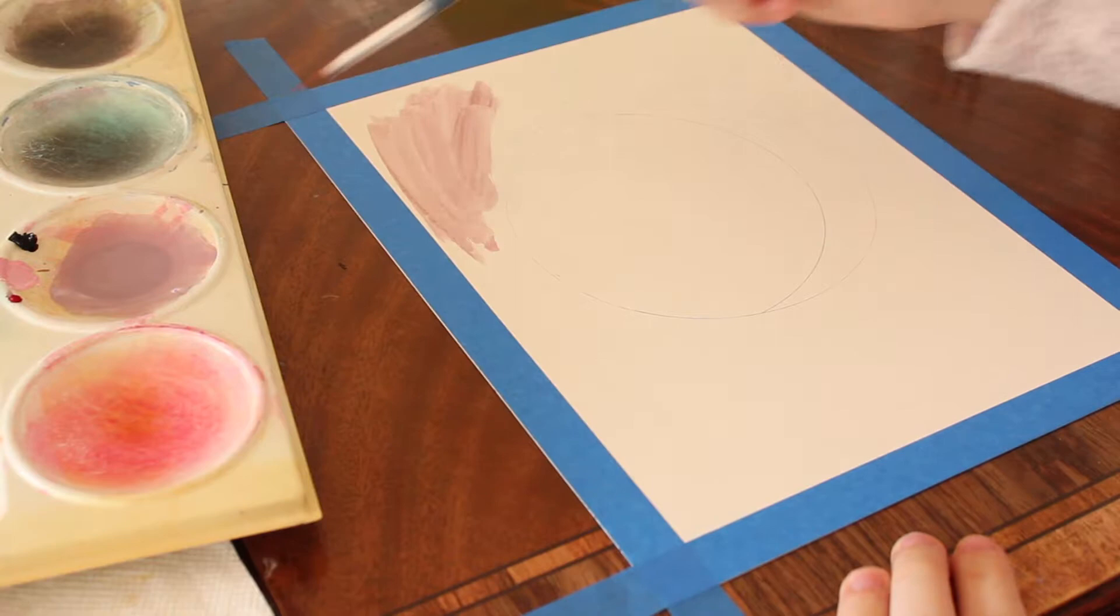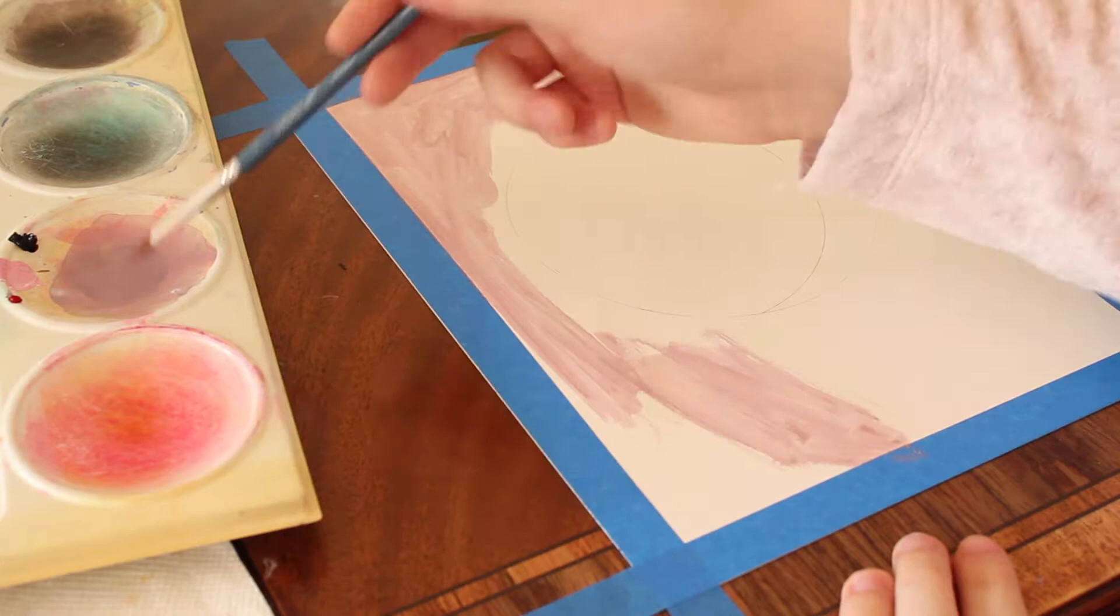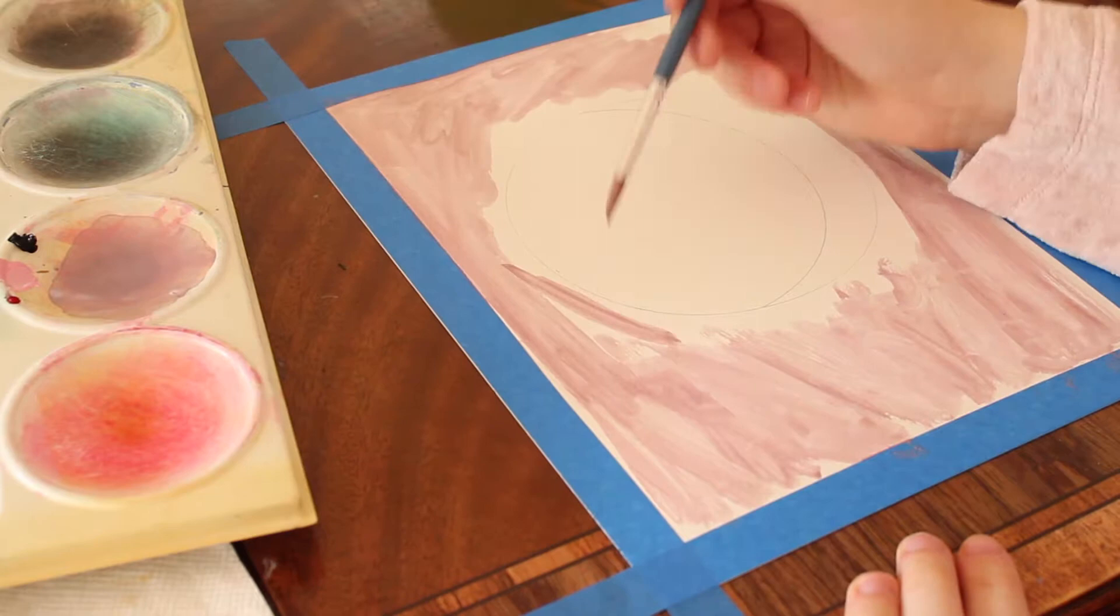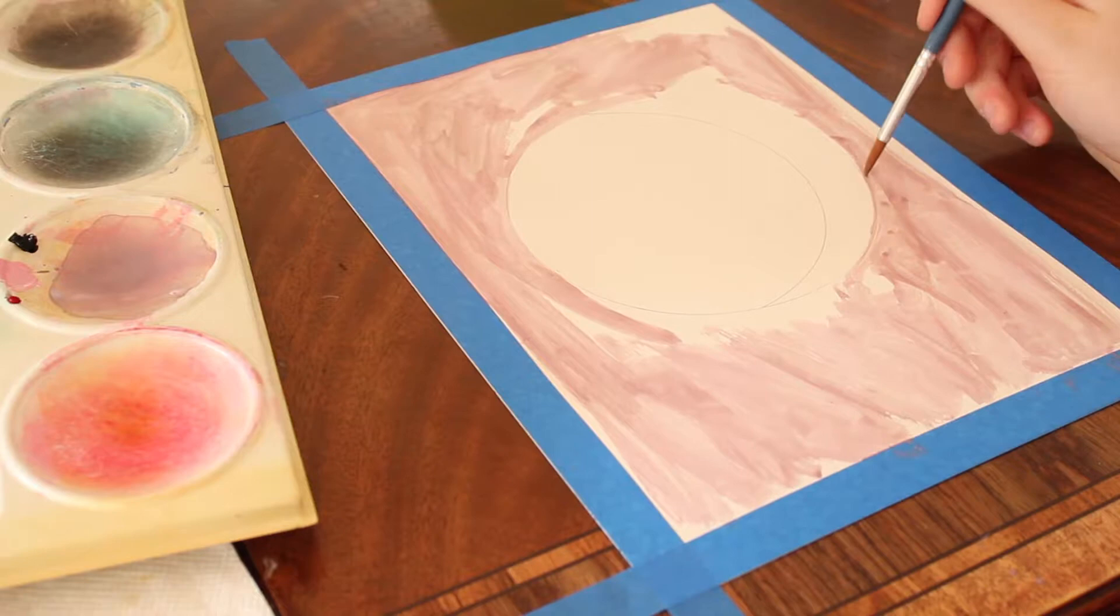Now I'm just taking a brush, although you should probably use a bigger one, and I'm applying the color all over my whole entire area around the circle shape.